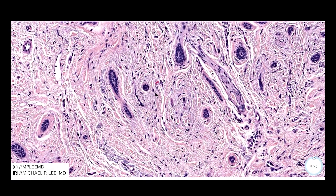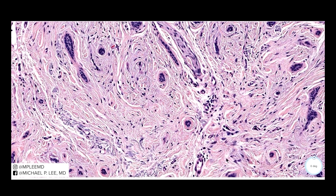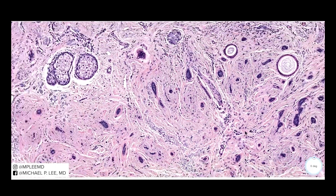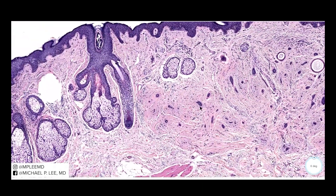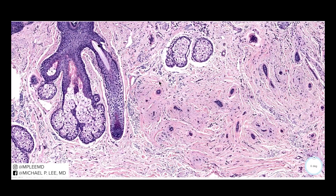This is different from microcystic adnexal carcinoma because we don't see any perineural invasion, we don't see the lymphoid aggregates, and it's a fairly well-circumscribed lesion with horn pseudocysts and calcifications. Here you can see more of that whirling pattern — the clefting occurs on the outside.